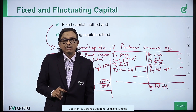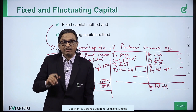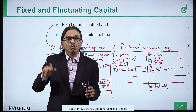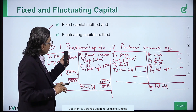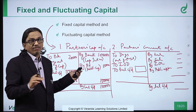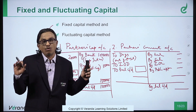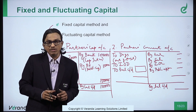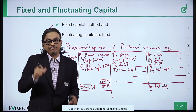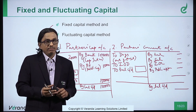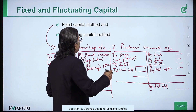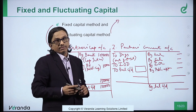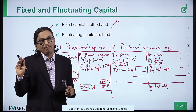That is why this method is called 'fixed capital' — generally the capital is fixed. It will have the opening capital, and only when there is additional capital or drawings out of capital will it be adjusted. Otherwise, the opening and closing balance will normally be the same.